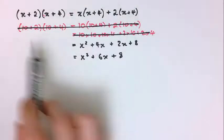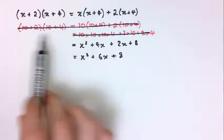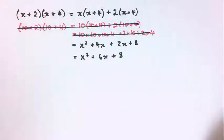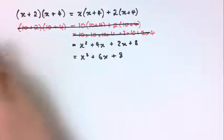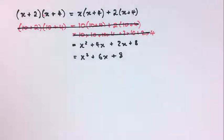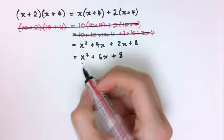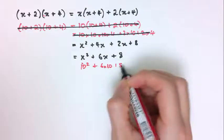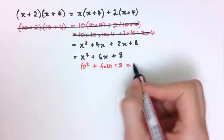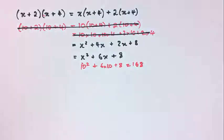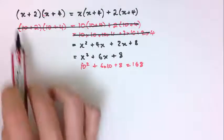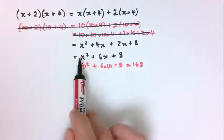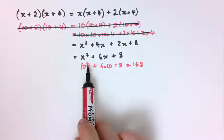Looking back to the numerical example, it was (10 + 2) times (10 + 4), which is 12 times 14. If you put x equals 10 into the expression, you get 10 squared plus 6 times 10 plus 8, which is 168 — and that's 12 times 14. The power of algebra is that I'm doing this for any value of x, not just 10.